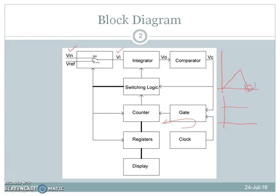When the output of the integrator crosses zero, the output of the comparator changes from high to low. This prevents the clock from passing through the gating logic and stops the counting operation. At this time, the switching logic generates two pulses: one copies the count to the registers, and the second pulse turns on the switch connected across the capacitor in the integrator. At the end of this pulse, another pulse resets the counter and starts the next conversion cycle.